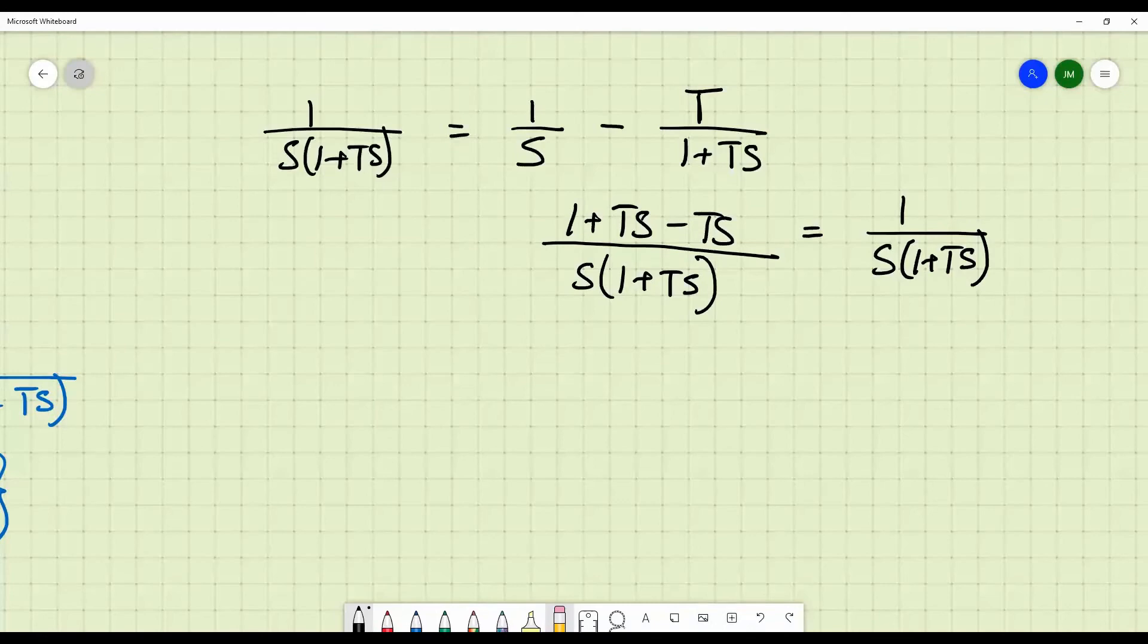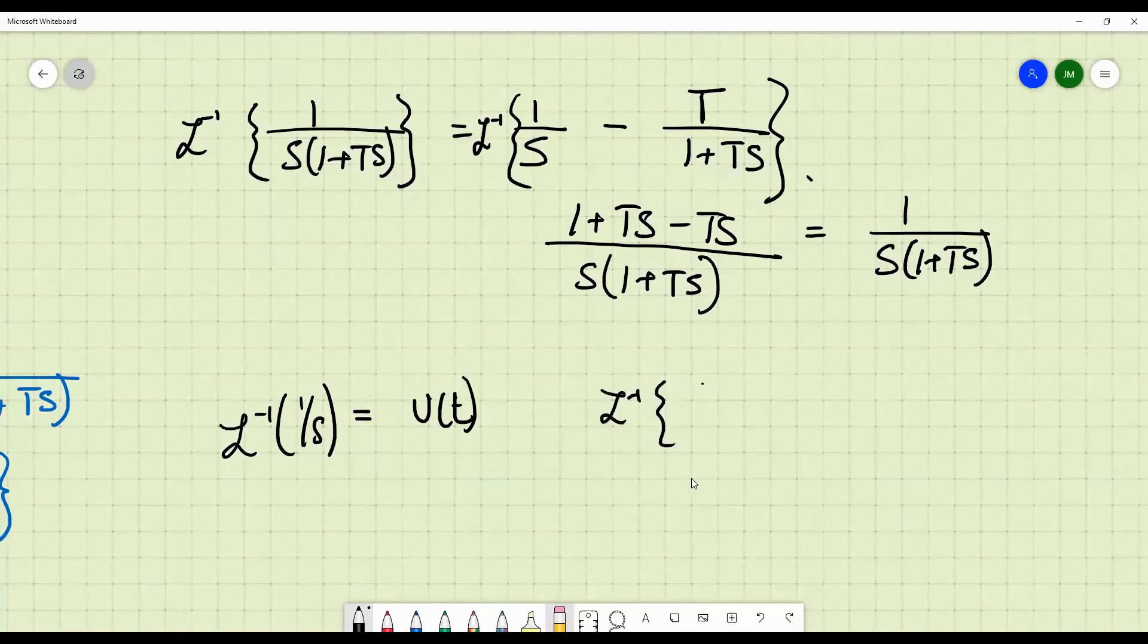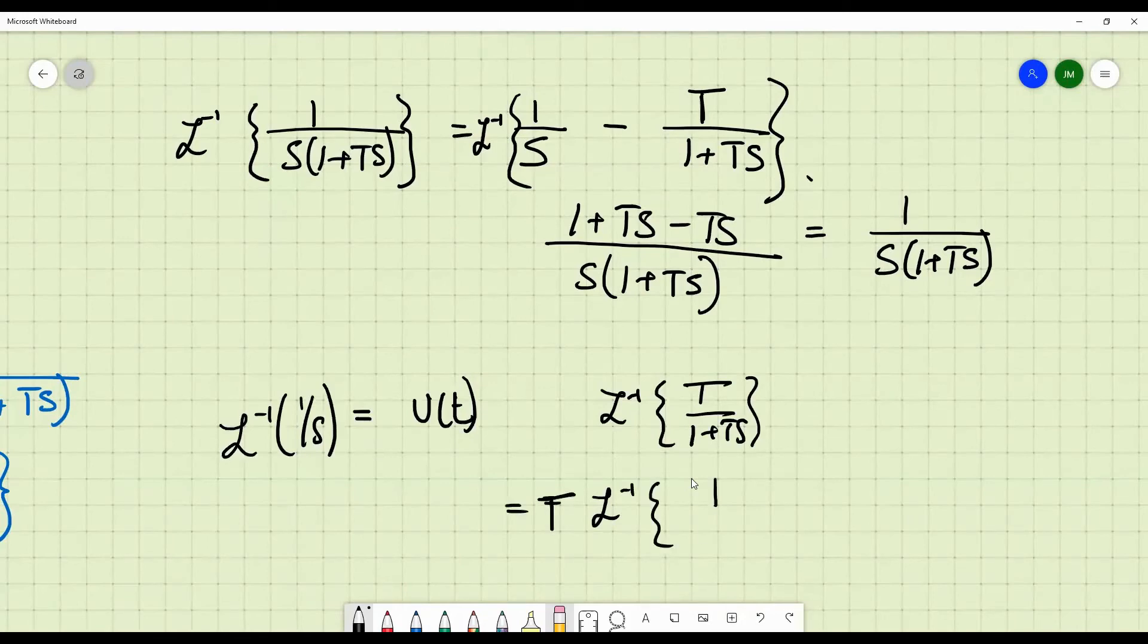So this is a pretty quick method to find out the partial fraction for first order systems. So, what you do, now L inverse of this is nothing but L inverse of this. Now what is L inverse of 1 by S? L inverse of 1 by S is nothing but the unit step input. And L inverse of T by 1 plus T S. That is equal to L inverse of T you can take outside. 1 by 1 plus T S. That is equal to T times.